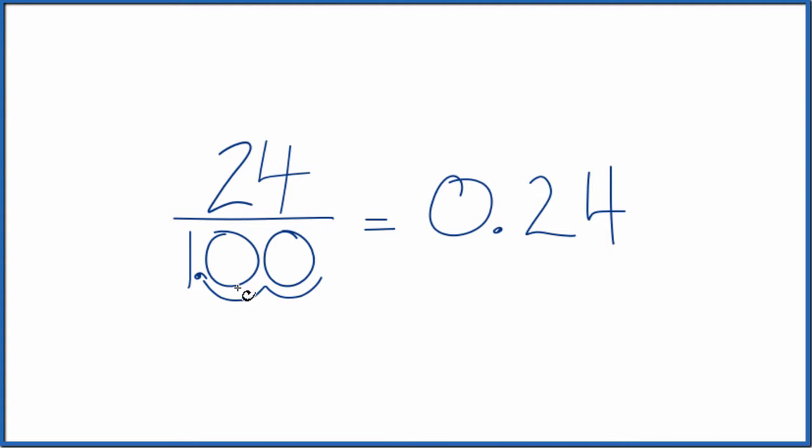So that just gives us 1. We also have to move the decimal place two places to the left, one, two, in the numerator. So now we end up with 0.24 over 1, which is just 0.24.